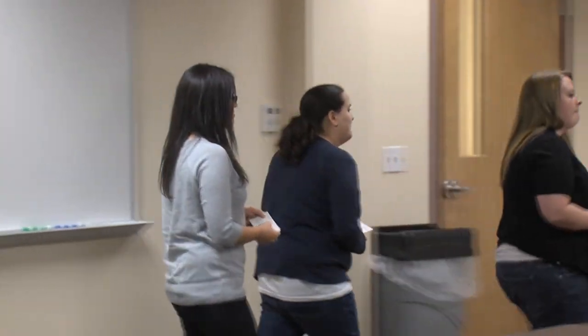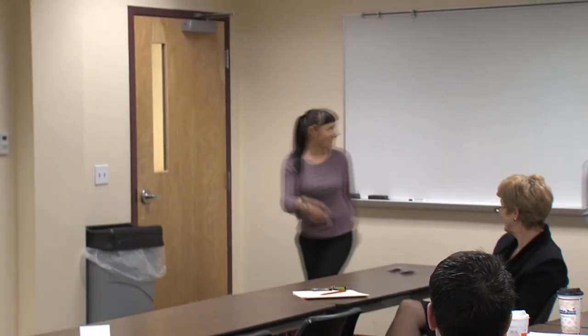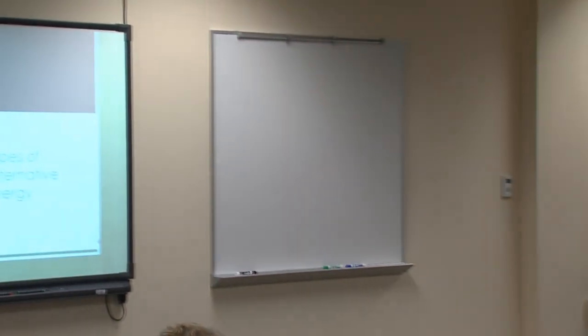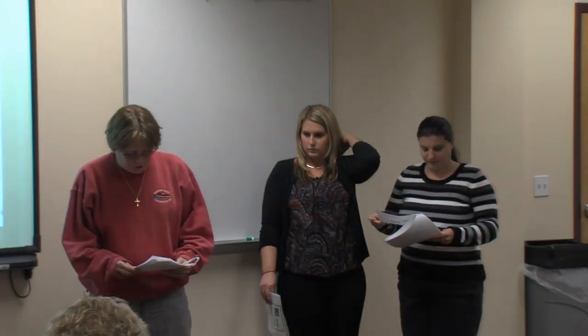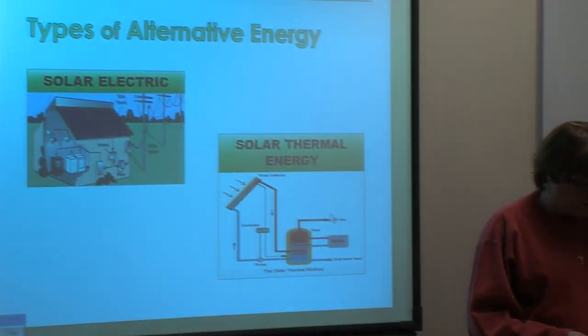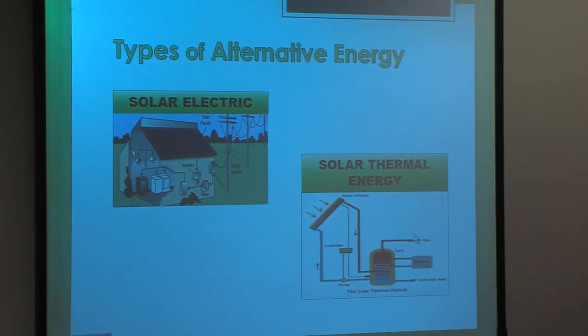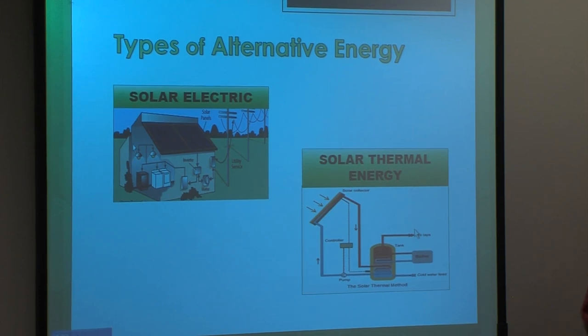Now for different types of alternative energy. Solar electric energy, also known as photovoltaic systems, converts sunlight into energy. Because of their modularity, PV systems can be designed to meet any electrical requirement, no matter how large or small. Solar thermal energy is a technology for harnessing solar energy for thermal energy, which is heat. Low temperature collectors are flat plates used to heat swimming pools; mid-temperature collectors are usually flat plates used to heat water and air in residential and commercial uses; high temperature collectors concentrate sunlight using mirrors and lenses and are generally used for electric power production.